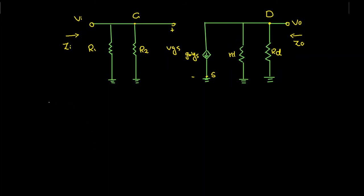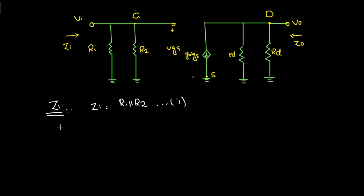First of all, to find the input impedance ZI. If you look, the input impedance ZI is equal to the parallel combination of R1 and R2. So ZI will be equal to R1 parallel to R2. This is equation number one.